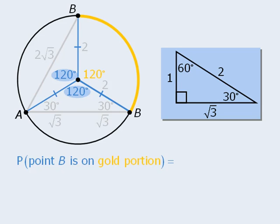So of the 360 degrees in the complete circle, the gold portion comprises 120 degrees. This means that the probability is 120 over 360 that a randomly selected point will be on the gold portion of the circumference.